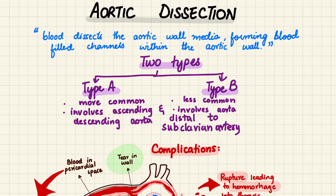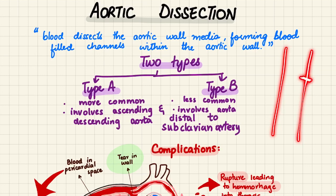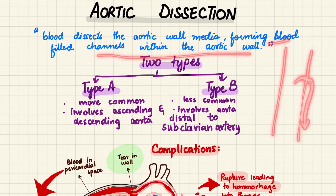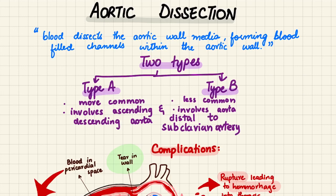Aortic dissection is a serious medical condition in which blood dissects the intima of the aortic wall, and the blood starts flowing between the intima and the media, forming blood-filled channels within the aortic wall. There are two types of aortic dissection: type A and type B.